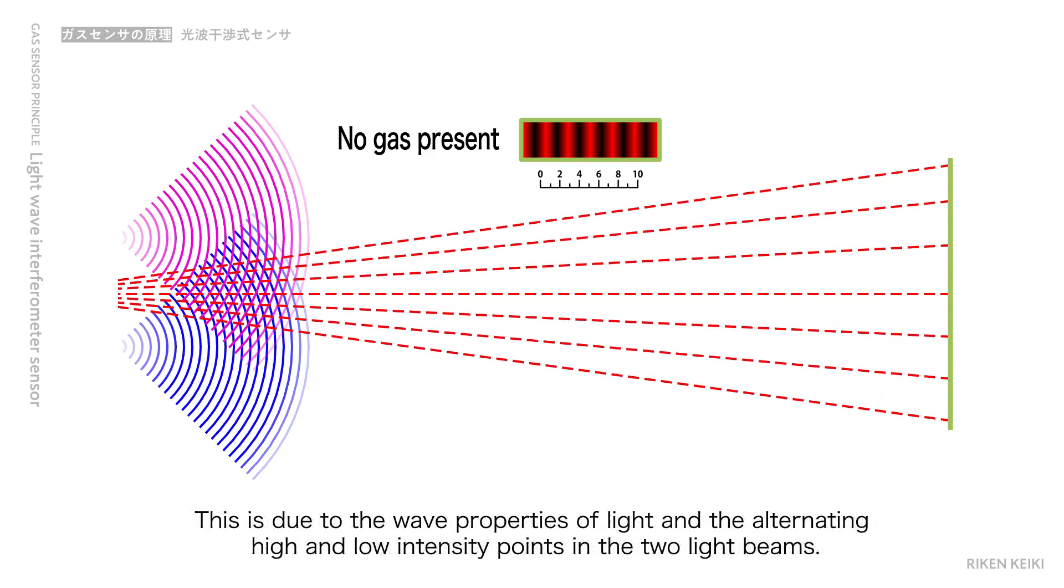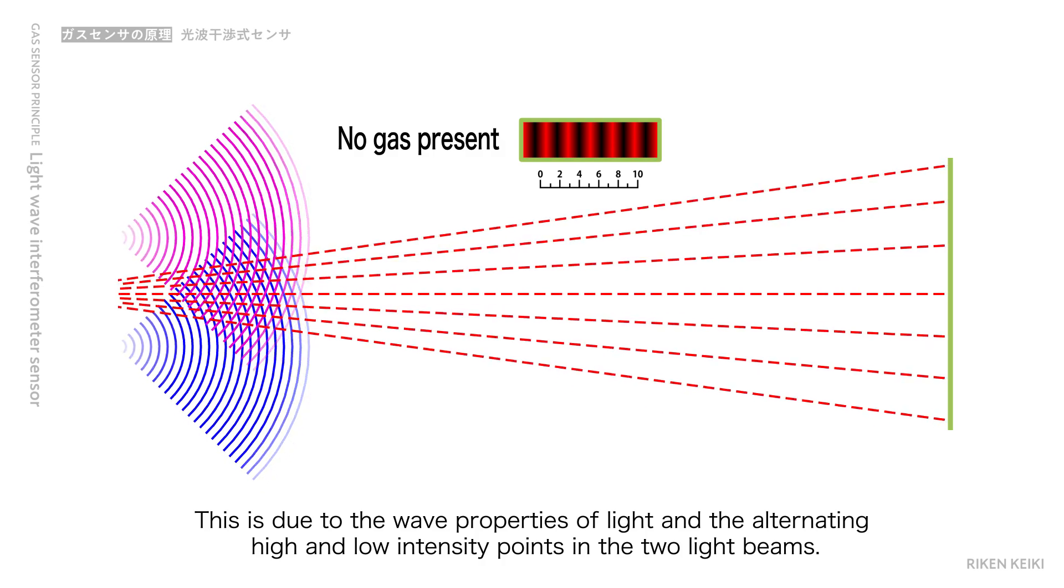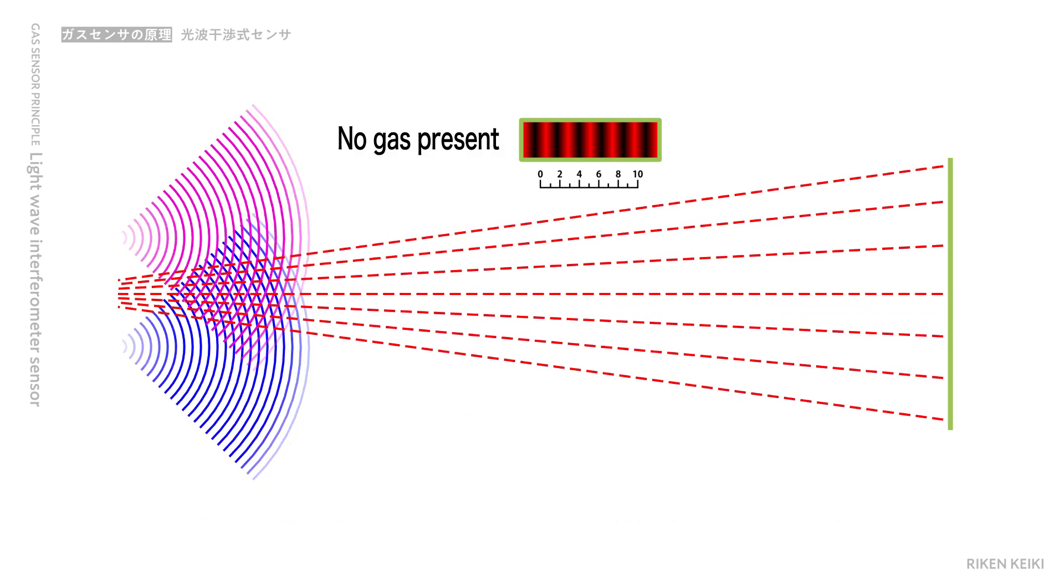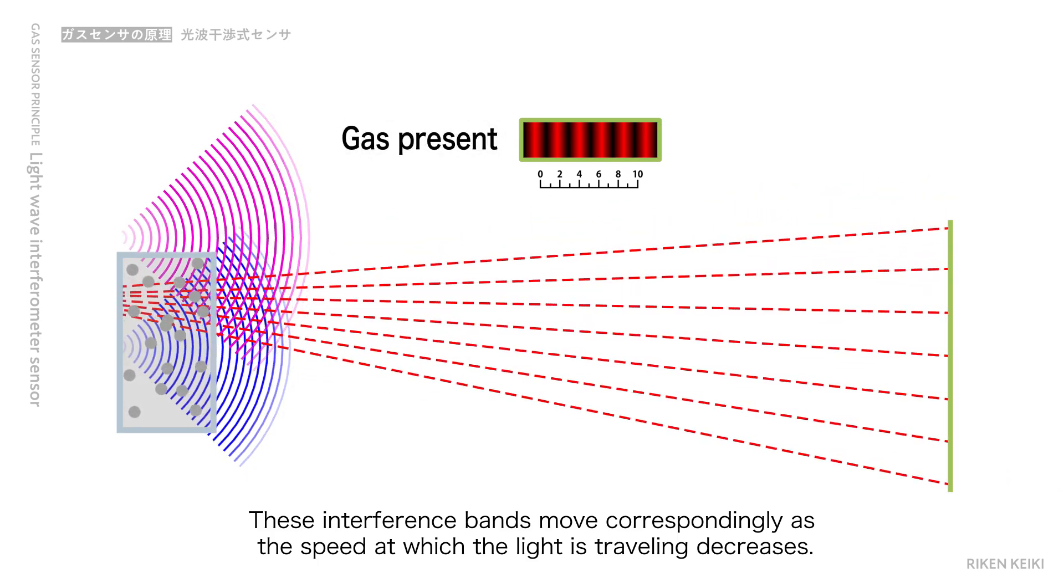This is due to the wave properties of light and the alternating high and low intensity points in the two light beams. These interference fans move correspondingly as the speed at which the light is traveling decreases.